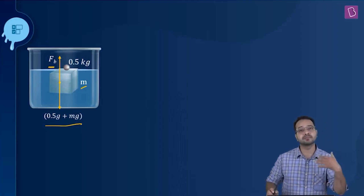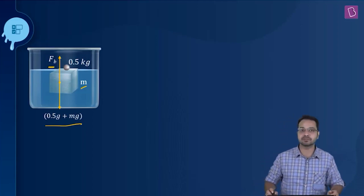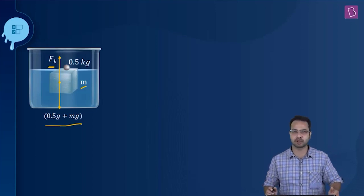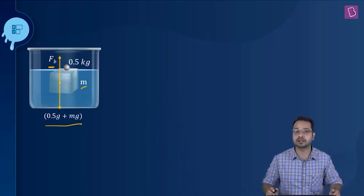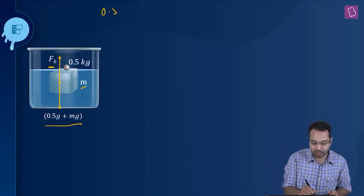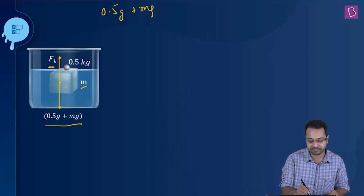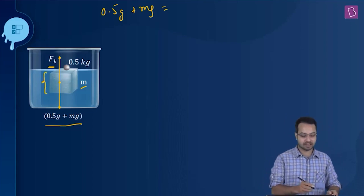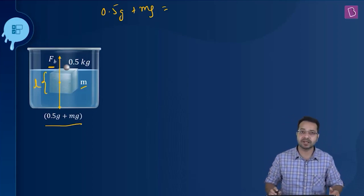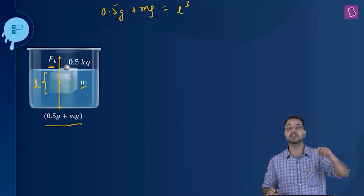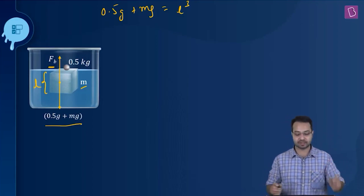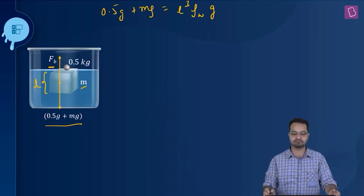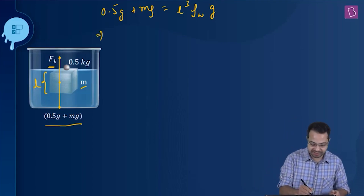The maximum buoyant force acts when the ice block is completely immersed. If it can support the metal in this condition, any greater volume will also work. Writing the equilibrium equation: 0.5g + mg = weight of liquid displaced. Let the edge length be l, so the volume is l³, which equals the volume of water displaced. The mass of water displaced is l³ × ρ_water, and multiplying by g gives the weight. g cancels from all sides.